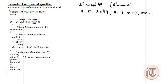Step two is to apply a while loop that runs as long as v3 is not equal to 0. Here u3 = u = 37 and v3 = v = 49. We check whether v3 is not equal to 0 — yes, v3 is 49, so we move to step three.